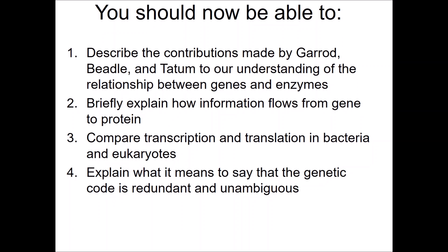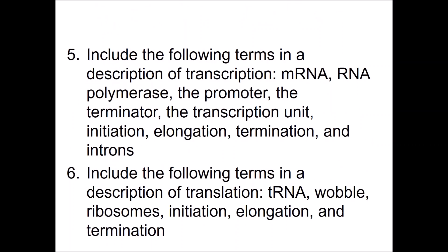You should now be able to cover all the slides for this entire chapter. There is another video on the Beadle and Tatum experiments to understand genes and enzymes. You should also be able to explain the central dogma of molecular biology, compare transcription and translation in bacteria and eukaryotes, and explain what it means when we say the genetic code is redundant. You should be able to detail transcription — including mRNA, RNA polymerase, the promoter, the terminator, the transcription unit, initiation, elongation, termination, and introns — and describe translation using the terms tRNA, wobble, ribosomes, initiation, elongation, and termination.